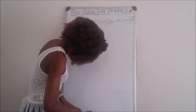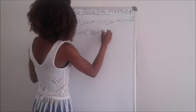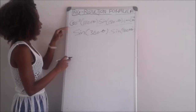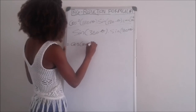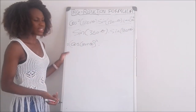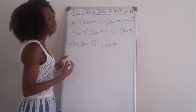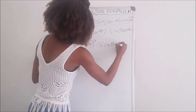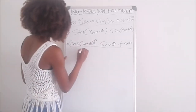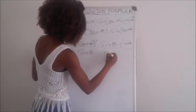Divided by sine (360 minus theta) multiplied by sine (180 plus theta). Now, 180 plus theta is in the third quadrant where tan is positive, so cos is negative — but squared gives positive cos squared theta. Sine (180 minus theta) is in the second quadrant where sine is positive, so we get sine theta. Tan (180 plus theta) is in the third quadrant where tan is positive, giving tan theta. For the denominator: sine (360 minus theta) is in the fourth quadrant where only cos is positive, so sine is negative — giving negative sine theta. Sine (180 plus theta) in the third quadrant gives negative sine theta.